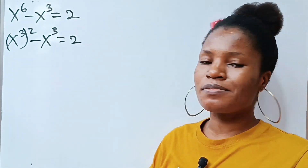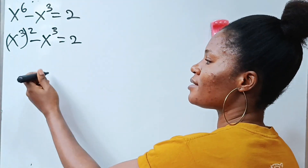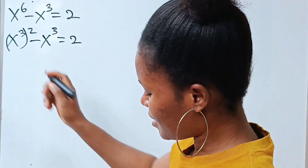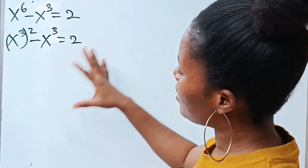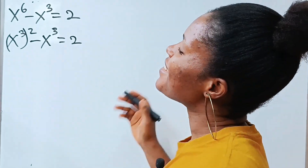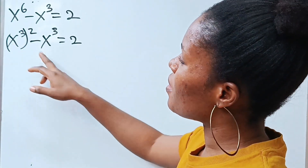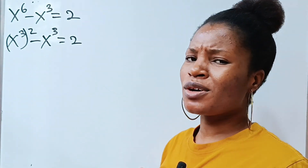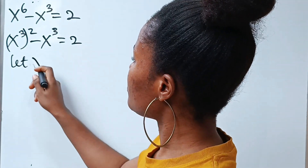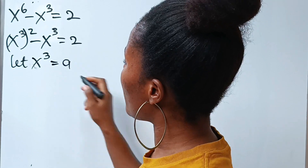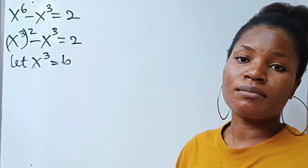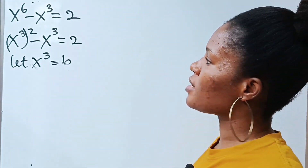Now we have x to the power of 3 and x to the power of 3 — let's call it something to simplify our equation. We say let x to the power of 3 be equal to b. I'm using b because a looks like 9 on my writing. So that means we can now write this substitution as b squared.